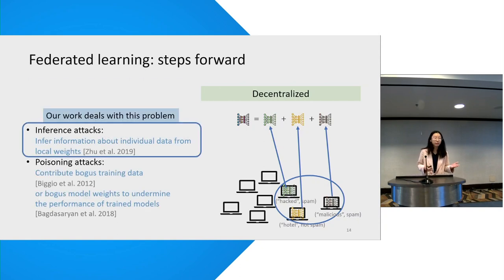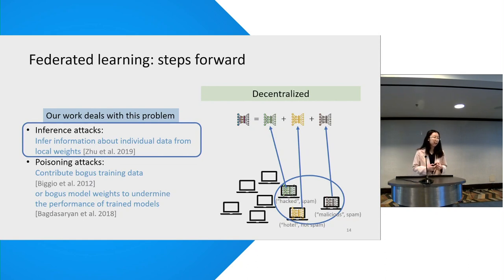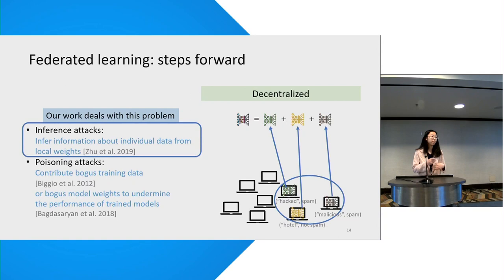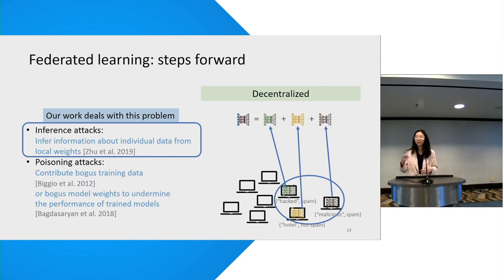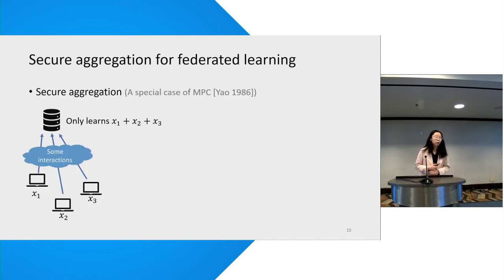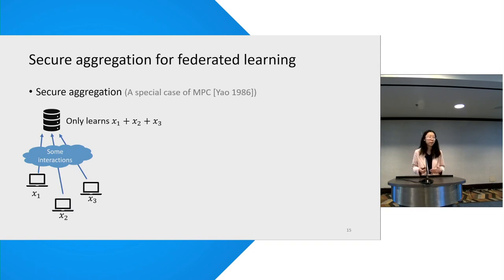The first type of attack means that the server can infer information about individual clients' data by observing the local weights, and in this work we deal with the first type. The second type of attack involves malicious inputs, which is orthogonal to this work. To prevent the server from seeing the local weights, prior work proposed using secure aggregation to perform the summation in a private way.